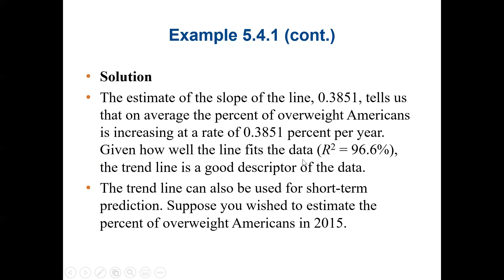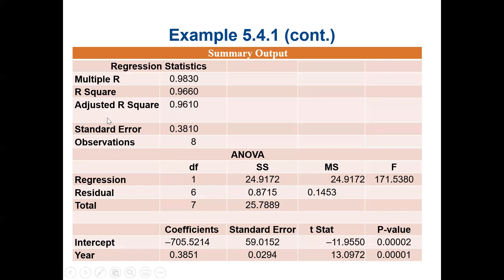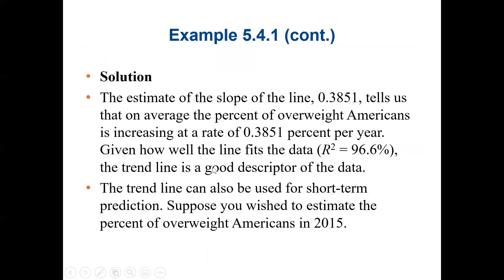Given how well the line fits the data, our R square was 96.6% from the computer output that was generated. This tells us that this is a very good trend line because almost 97% of the independent variable explains the dependent variable. In this case, the time really explains the percent of Americans obese.